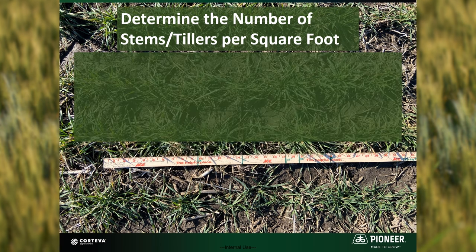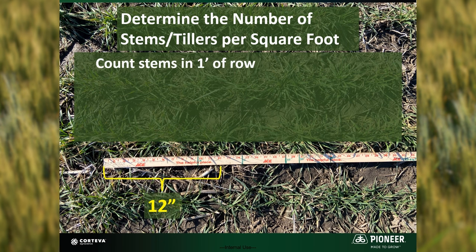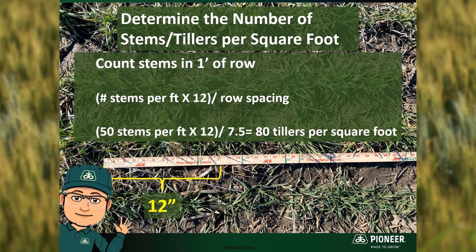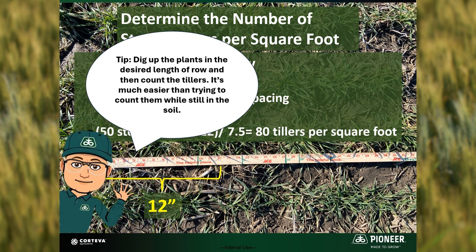For the foot of row method, count the number of stems in one foot and use the following equation: number of stems per foot times 12, divided by the row width. I recommend digging up the plants to separate and count the stems, as this is much easier than trying to count them while still in the soil.